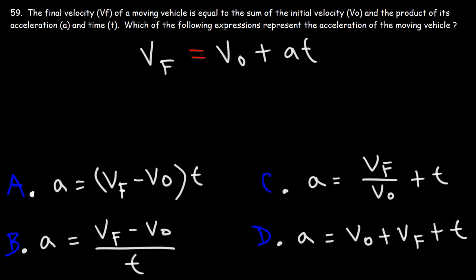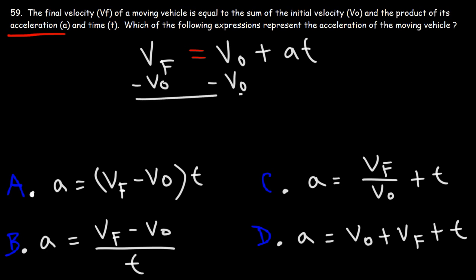We need to isolate the variable a, acceleration. We need to get a by itself somehow. What we need to do is subtract both sides by the initial velocity. So we have V-final minus V-initial is equal to AT.